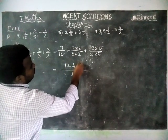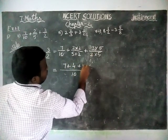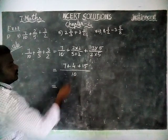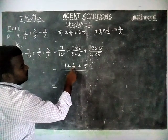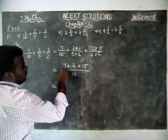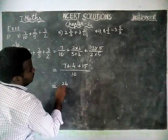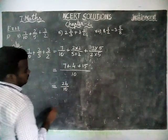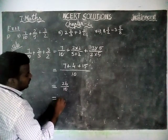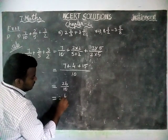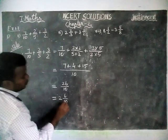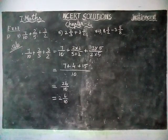...2 twos are 4, plus 3 fives are 15. So 15 plus 4 equals 19, plus 7 equals 26. 26 divided by 10 — in 26 we have 2 tens and remainder 6. The divisor is 10, so the answer is 2 and 6/10.